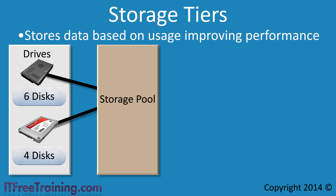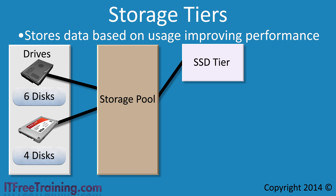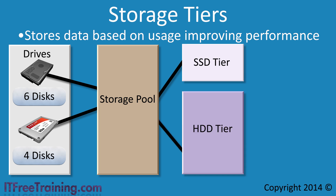Since the solid state drives are faster than the hard drives, you want the solid state drives to be used for files that are accessed frequently. To do this, drives can be divided into two tiers: the solid state tier and the standard hard disk tier. This allows Storage Spaces to move files that are accessed frequently onto the solid state tier and put less used files on the hard disk tier.